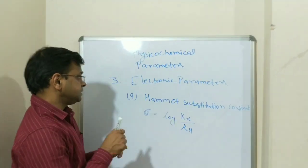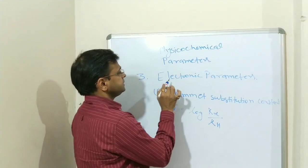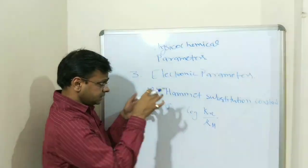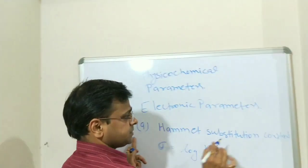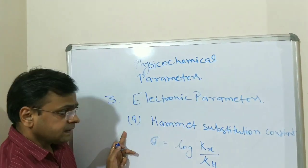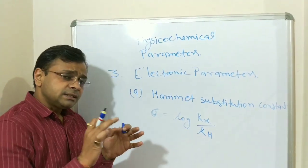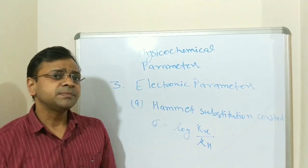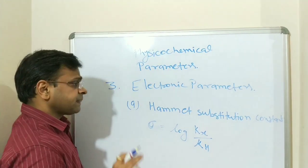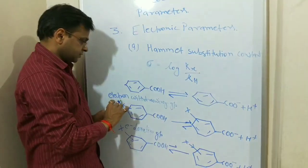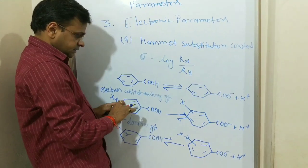Third, the most important property, is electronic parameters. And in electronic parameters, the first parameter is the Hammett substitution constant. Hammett substitution constant is a measure of electron withdrawing or electron donating power of a substituent of a group. So how does this electron withdrawing group in benzoic acids, what happened? On ionization, the equilibrium will be shifted towards the right hand side.